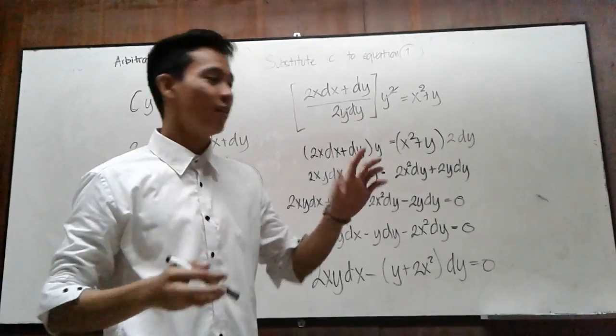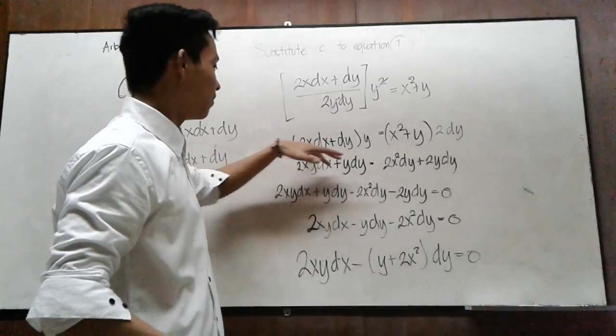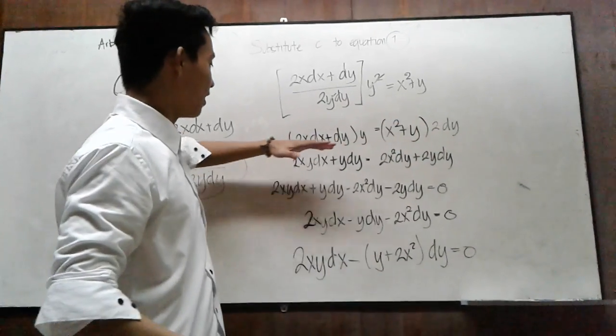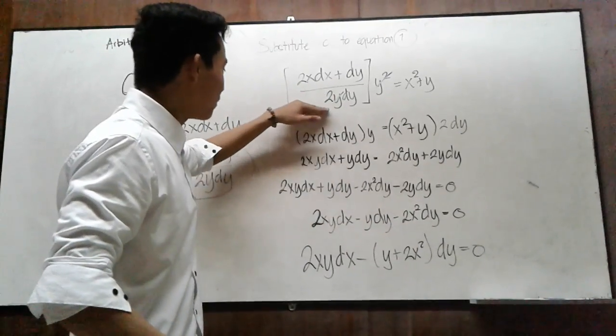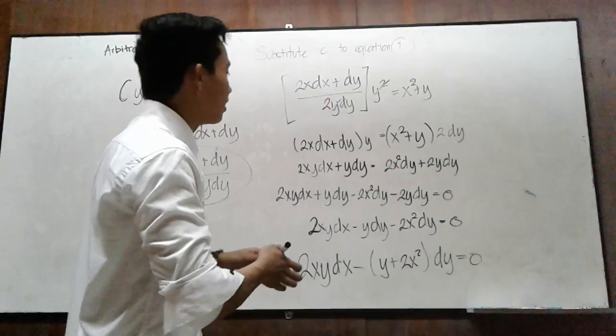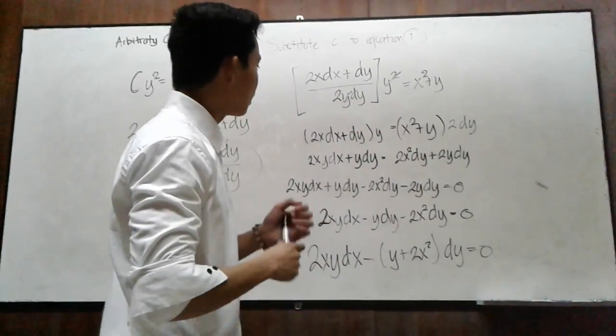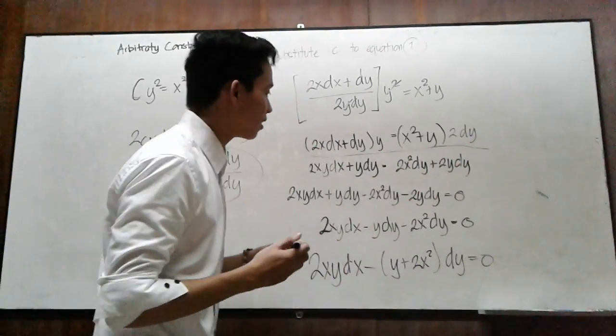To come up with an answer, you simply cross multiply 2y dy to the other side and just leave y as it is. This is the equation for that step.